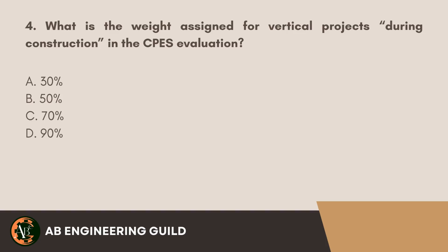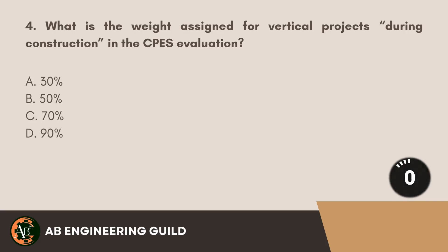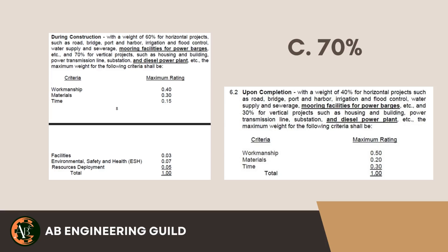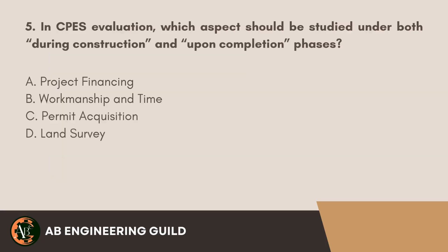Question 4: What is the weight assigned for vertical projects during construction in the CPES evaluation? A. 30%. B. 50%. C. 70%. D. 90%. Answer: C. 70%.